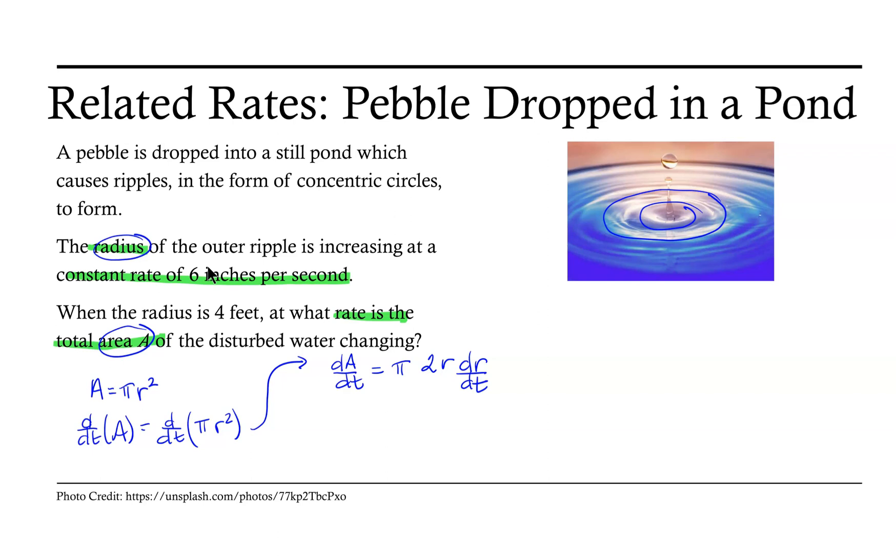Here we have an equation that relates the rates of change for area on the left and radius on the right.